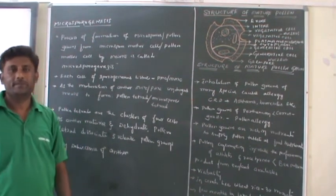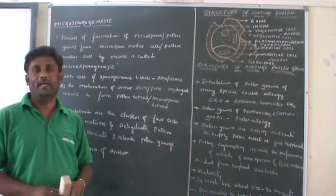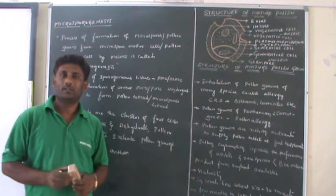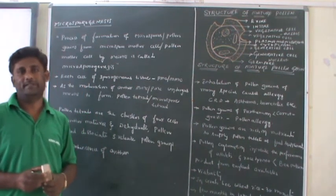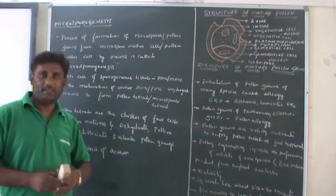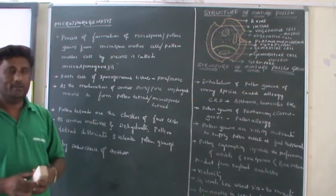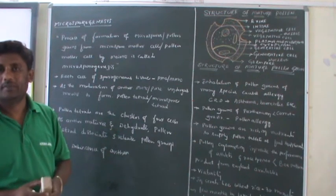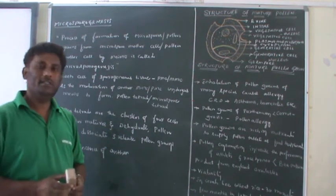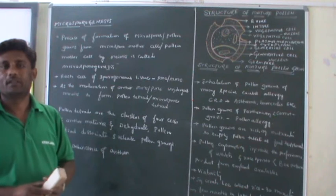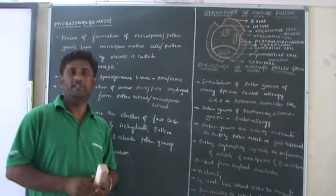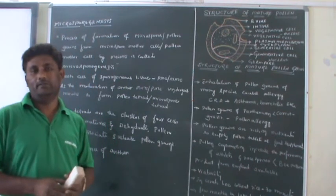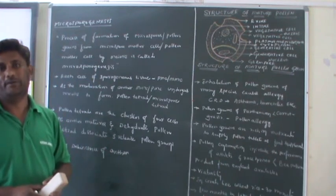Good morning students. In the last class we studied about the structure of the anther. When we observe the cross-section of the anther, we find different layers: the outermost is known as the epidermis, then the endodermis, middle layers, and typical cells. Within these there will be presence of the pollen sacs or pollen chambers, which constitute a homogenous tissue known as the sporogenous tissue, and that sporogenous tissue later on will become pollen grains or microspores.